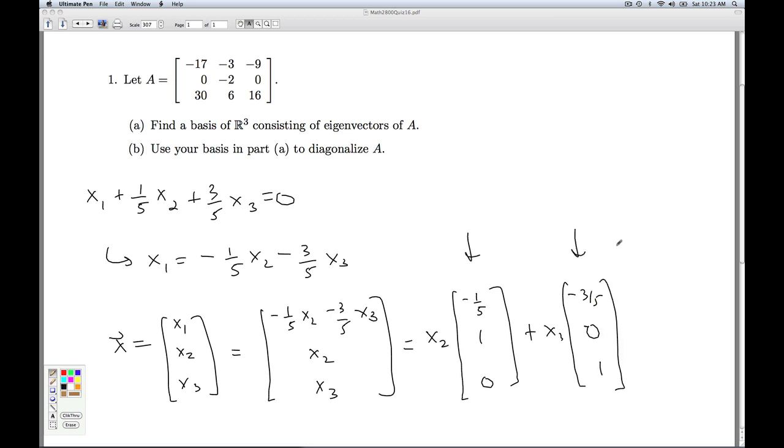Okay, so I could pick those as my two of my basis vectors for R³. They're linearly independent, you can see because they have leading ones in different places. But I can take any multiple of those, and so what I'm tempted to do is multiply by five to kill off the fractions. All right, so these two vectors represent a basis for the eigenspace. We talked about that in class last time. The eigenvectors I'm going to pick out of this, so I'm going to just multiply by five and have negative one, five, zero, and negative three, zero, five. So these are two of my three basis vectors for R³.